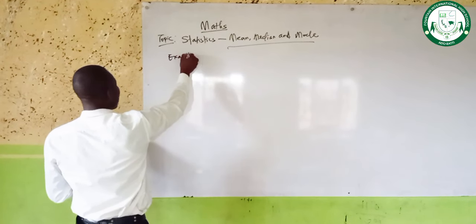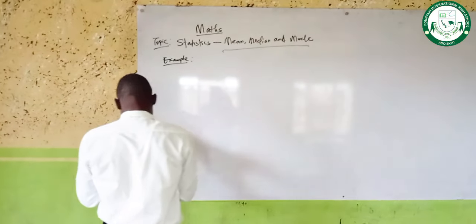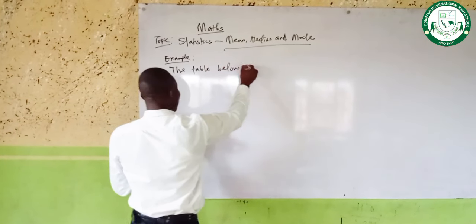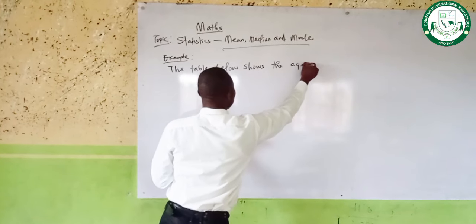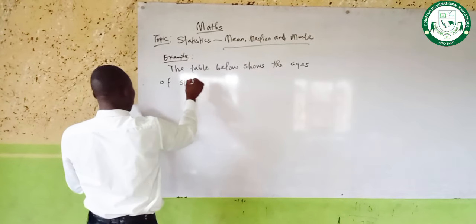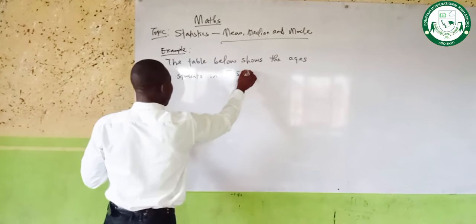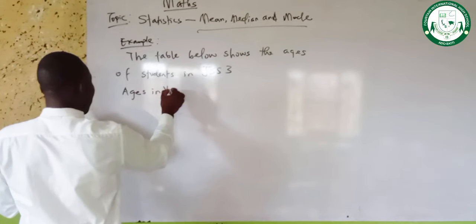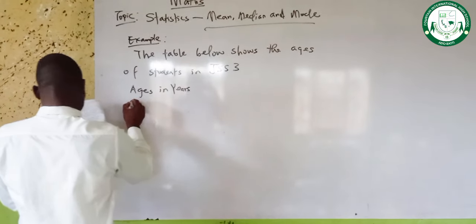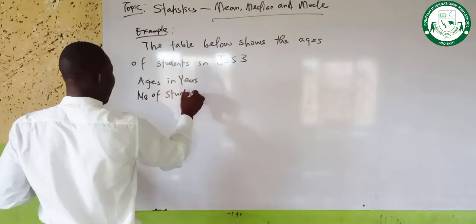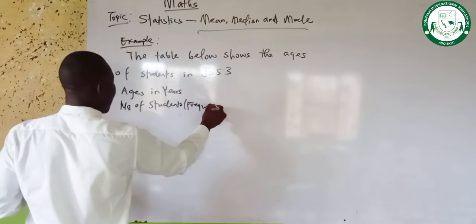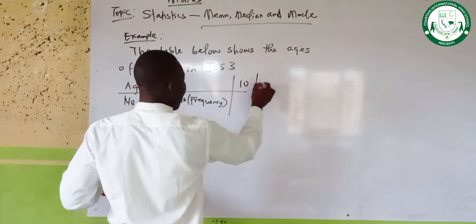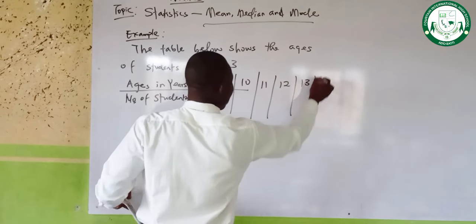Let's take an example. The question says: the table below shows the ages of students in a genetics class. We are looking at ages in years and the number of students as our frequency. The ages we are between are 10, 11, 12, 13, and 14.